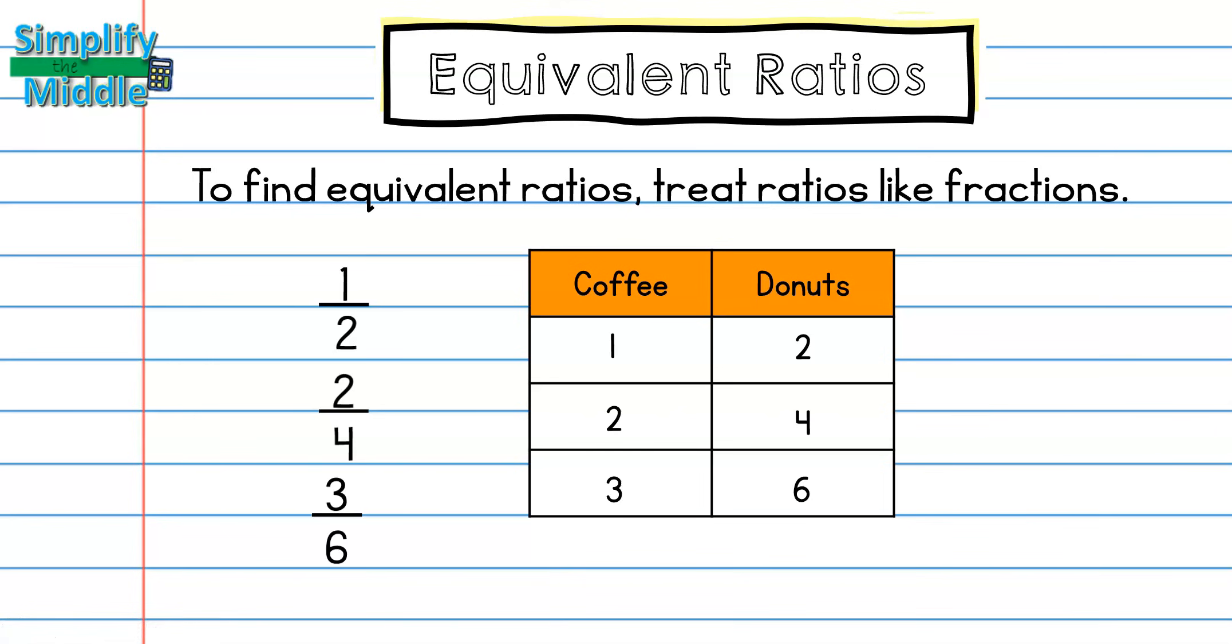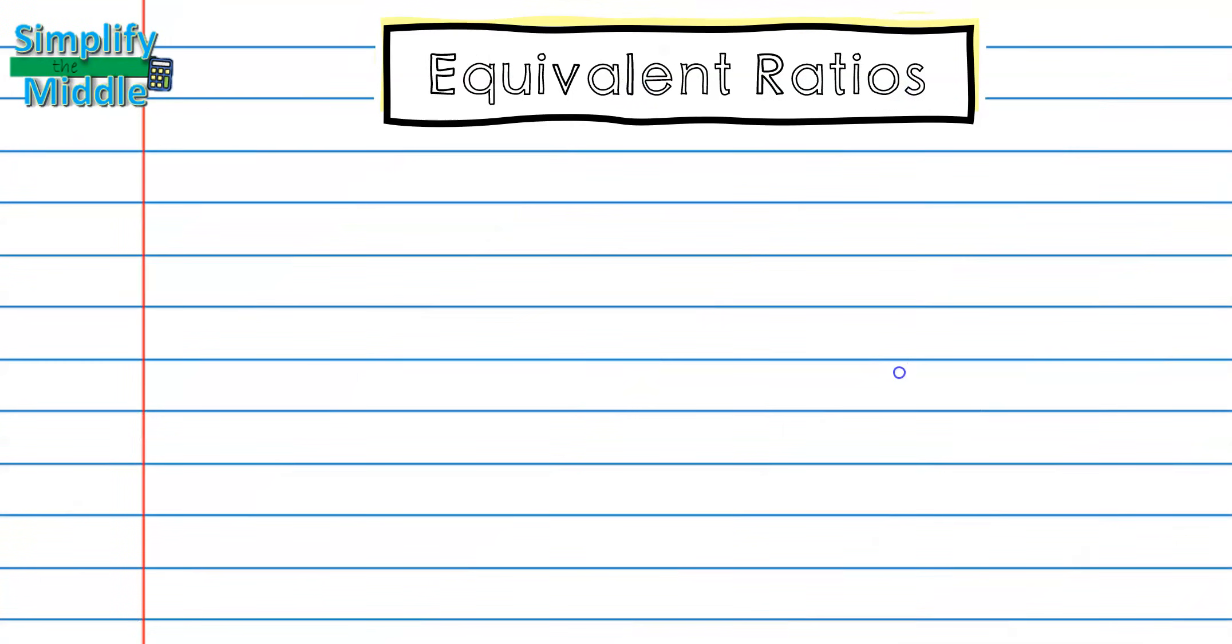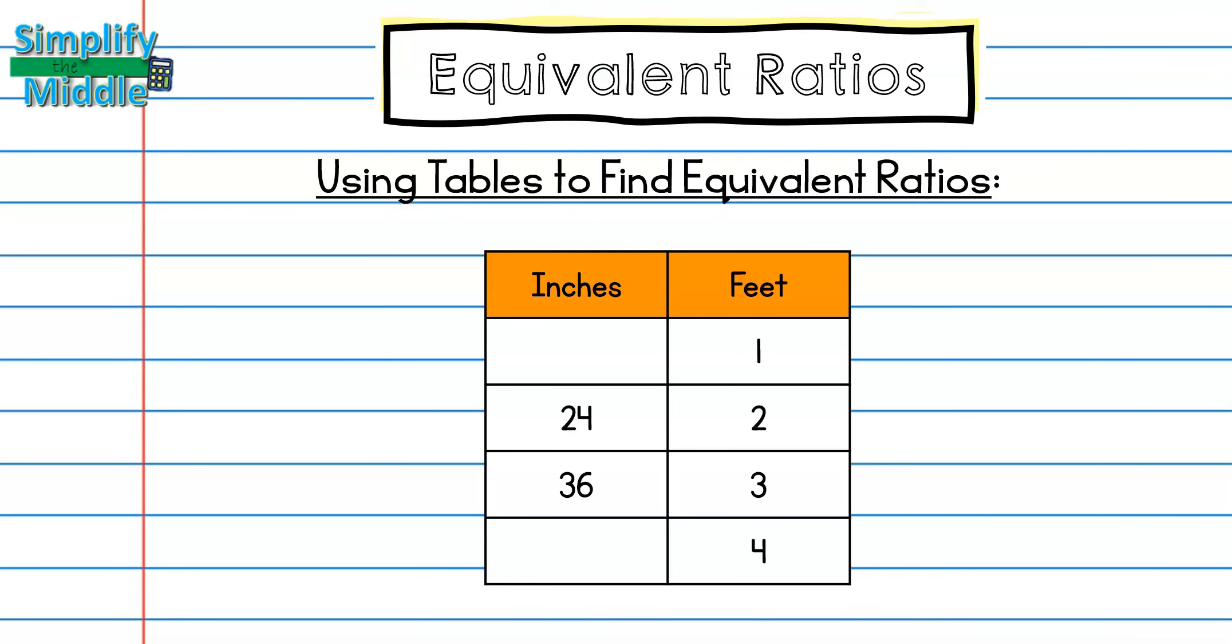Ratio tables are very helpful. Let's look at another example with them. Here I have inches compared to feet. I have a relationship of 24 inches to 2 feet and 36 inches to 3 feet. I notice that I am missing the number of inches for 1 foot and the number of inches for 4 feet.